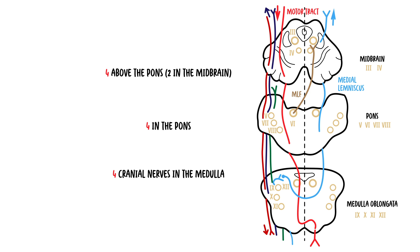Cranial nerves three and four are within the midbrain. In the pons, there are cranial nerves five, six, seven, and eight. And in the medulla, there are cranial nerves nine, ten, eleven, and twelve.